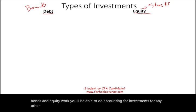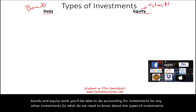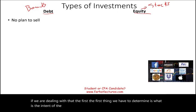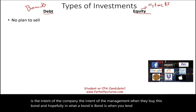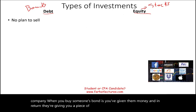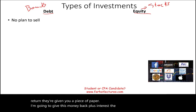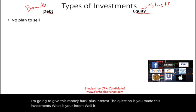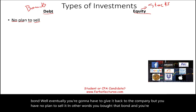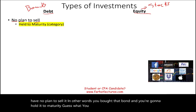When dealing with debt, the first thing we have to determine is the intent of the company — the intent of management. When they buy this bond — and hopefully you know that a bond is when you lend money to a company — you make the investment and then ask: what is your intent? If you have no plan to sell the bond and plan to hold it to maturity, you classify it as held to maturity. So held to maturity is the first classification.